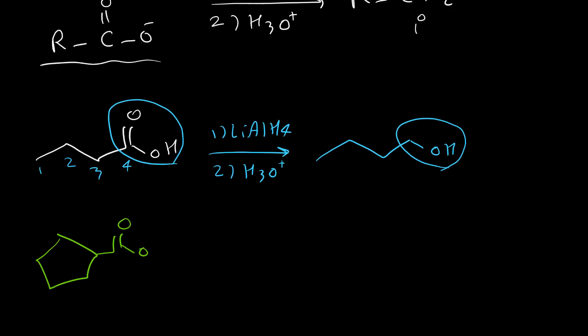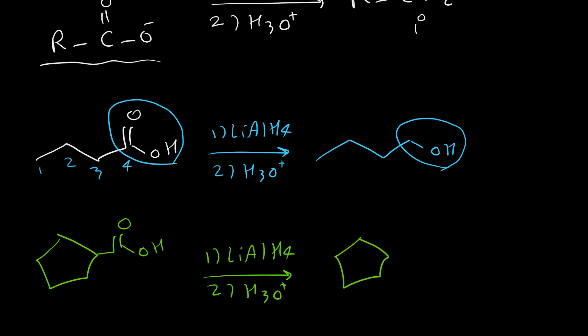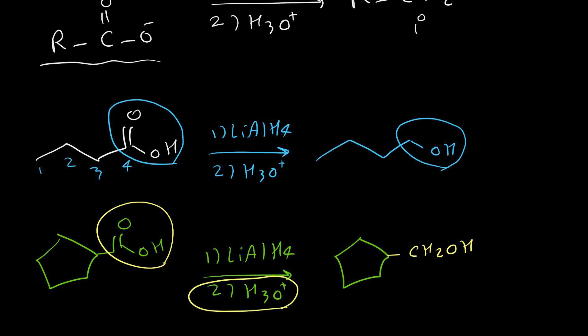Here is another example: cyclopentane carboxylic acid reacted with lithium aluminum hydride under acidic conditions. Again, all we need to do is convert the carboxylic acid functional group to CH₂OH. Sometimes the second step is not explicitly written, but we should always assume there is water or acid added after LiAlH4.